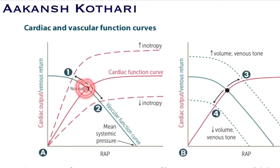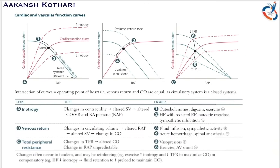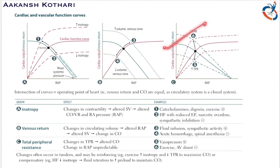The red curve is called the cardiac function curve or heart function curve, and the blue curve is the vascular function curve representing the arterial and venous system. The heart functions at the intersection of these two curves. There are three effects on these kinds of curves: the inotropy effect, the venous return effect, and the total peripheral resistance effect.